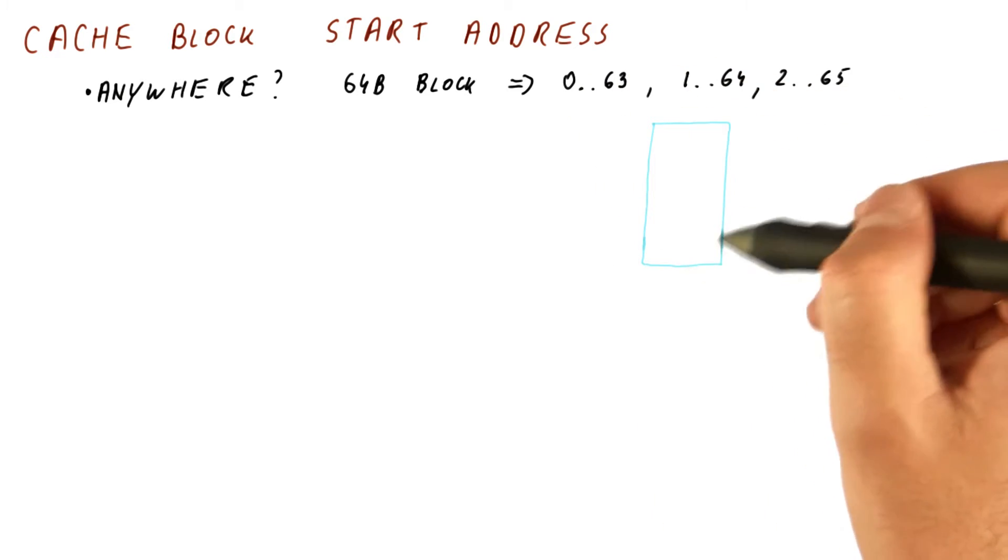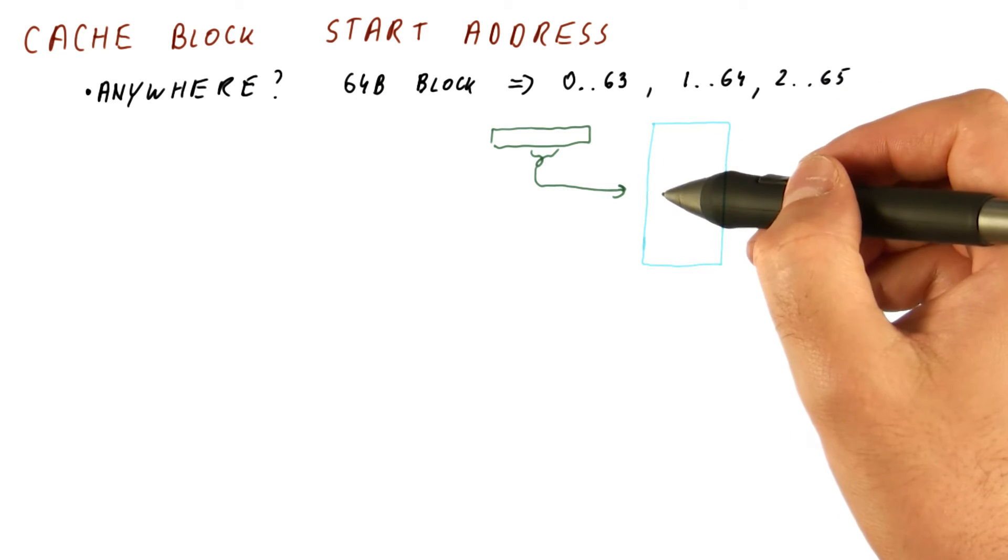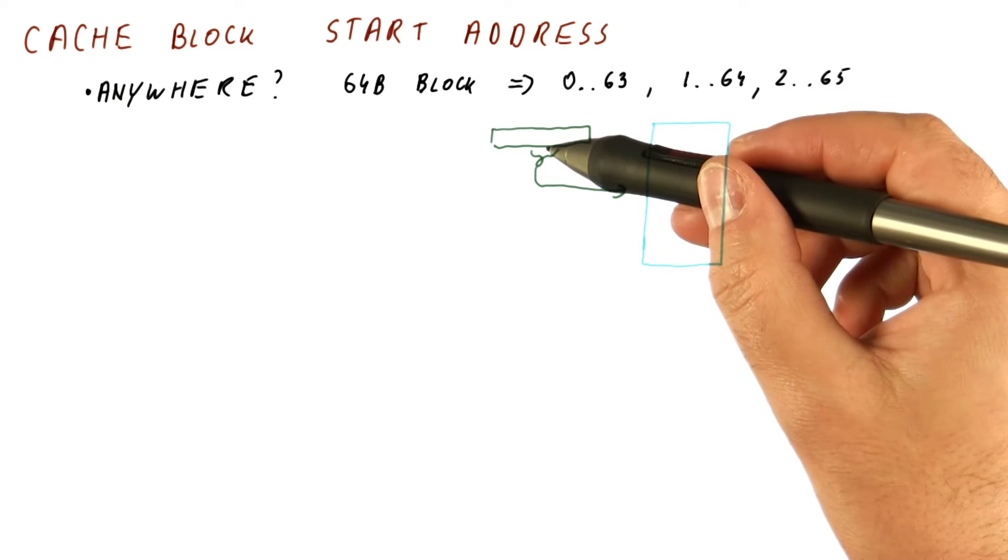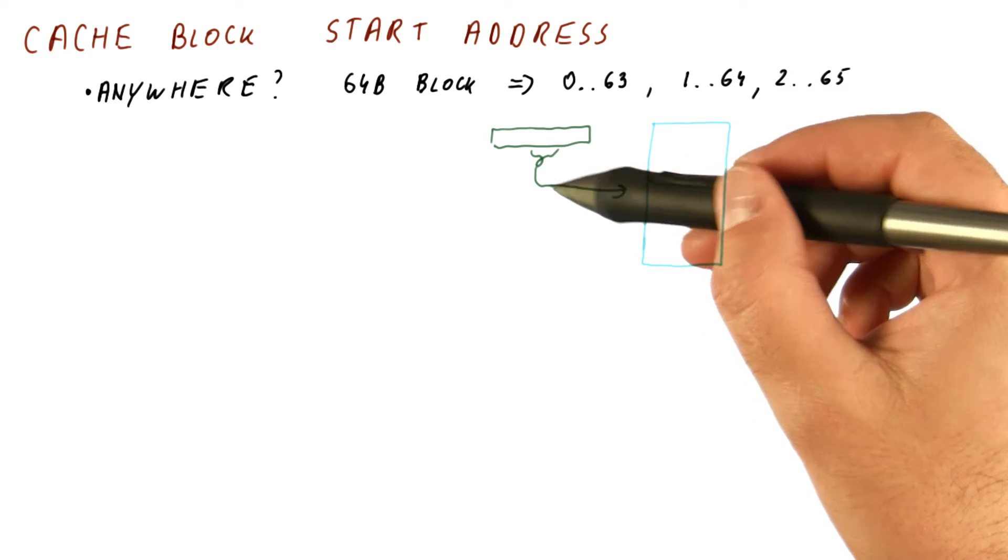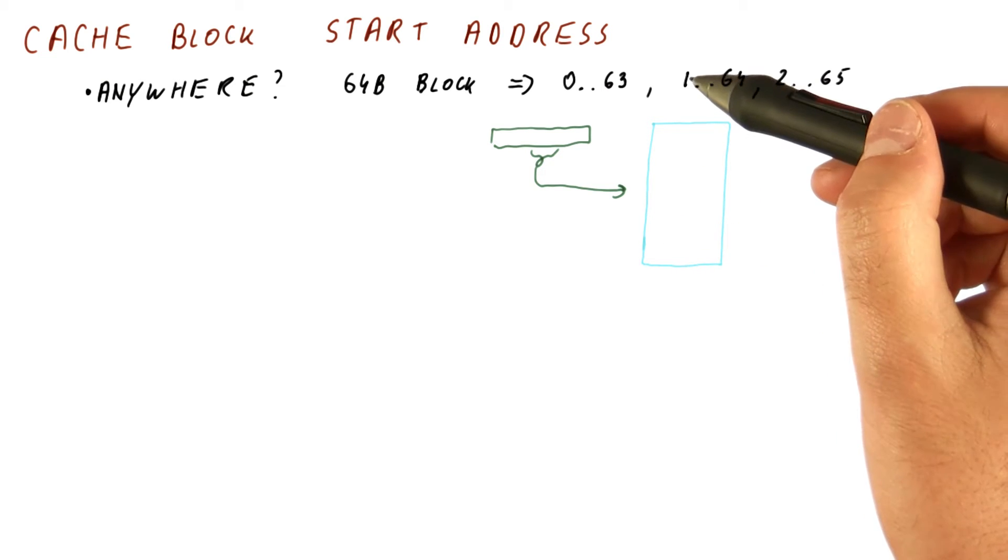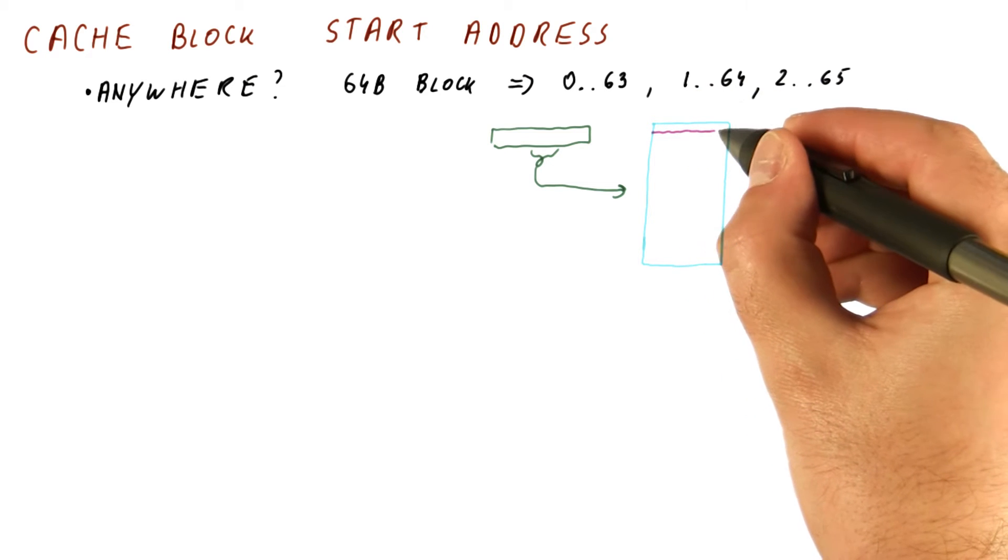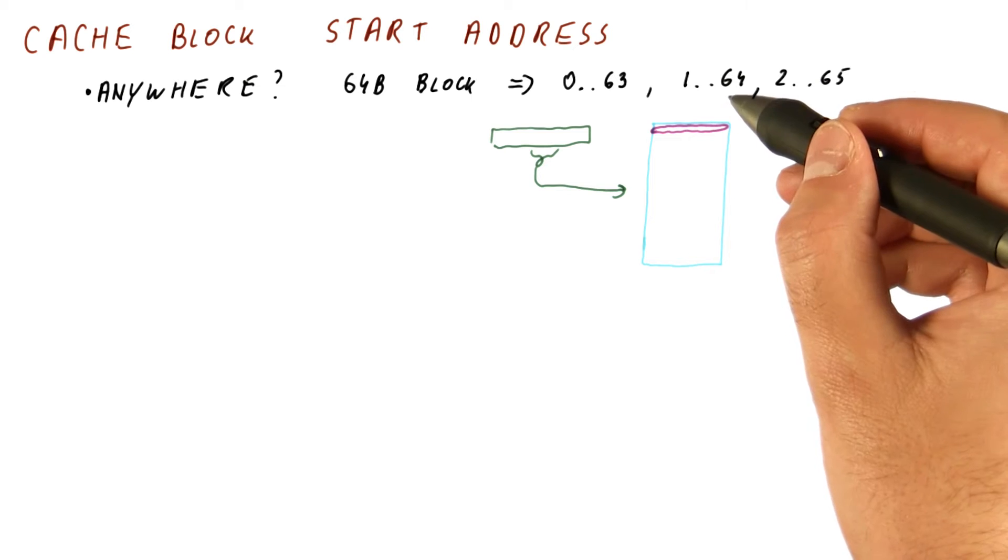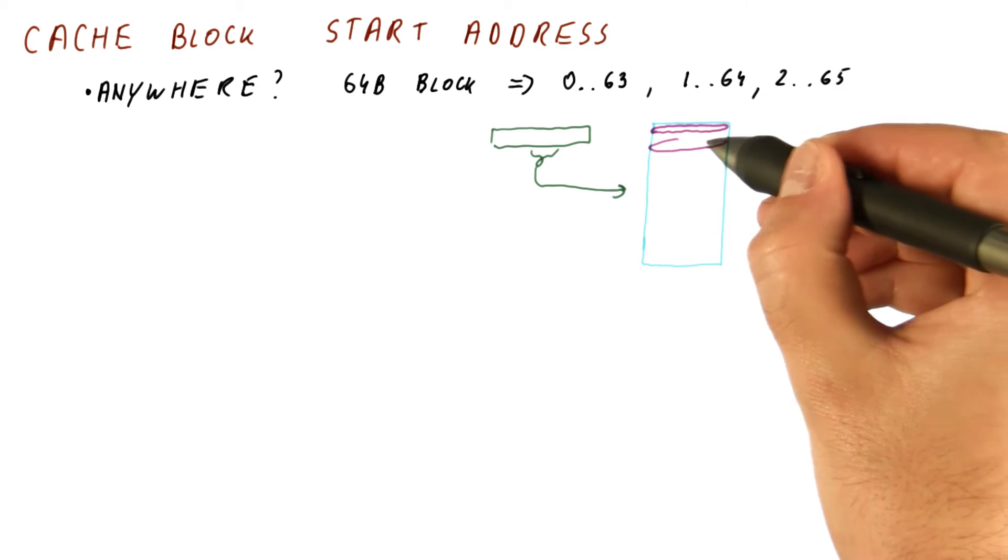First, our cache is a table. We want to index into that table using some bits of the address that we're accessing. But let's say that what we're accessing is the address 27. The problem is the block can actually be found wherever the beginning address of the block maps. So block 0 through 63 might map here in the cache.